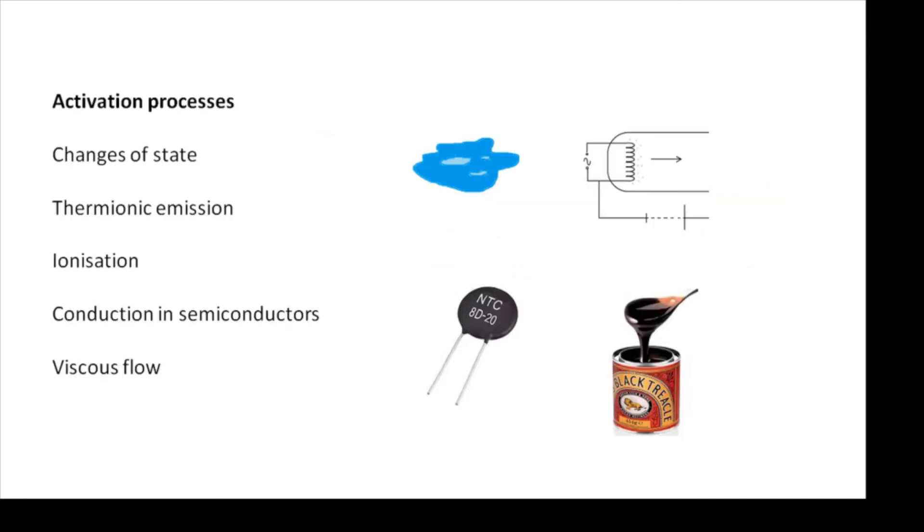Here's some other examples of activation processes. These are the ones that are mentioned on the OCR specification: changes of state, as in a liquid evaporating; thermionic emission; ionization; conduction in semiconductors. This is why thermistors, why their resistance gets less at higher temperatures, because more conducting particles become mobile; and viscous flow. Why does treacle flow? Because there are enough molecules which have enough energy to break their bonds.